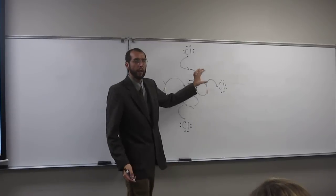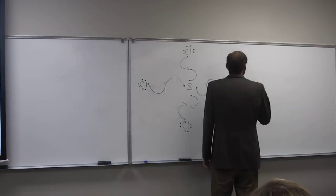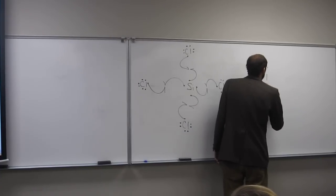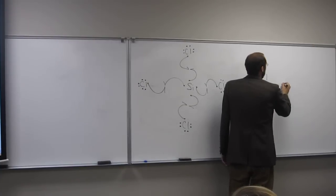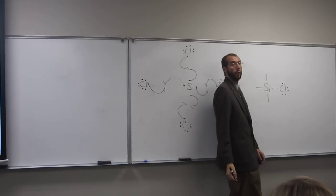So, they're sharing these electrons, remember, sharing. So, when we draw the structure, it's going to be silicon with a covalent bond and chlorine with all of its valence electrons still showing.